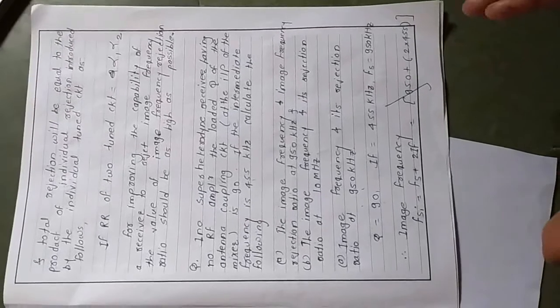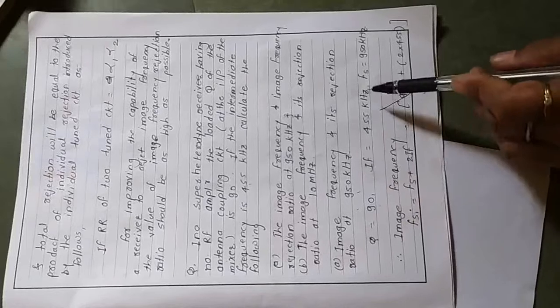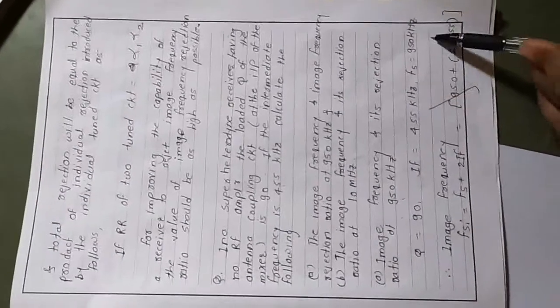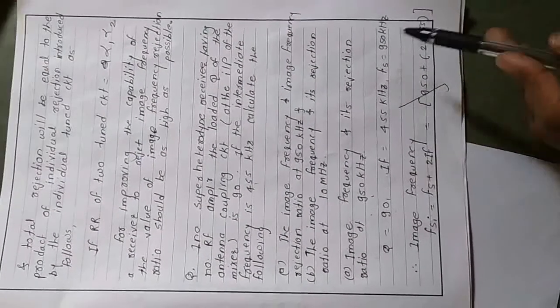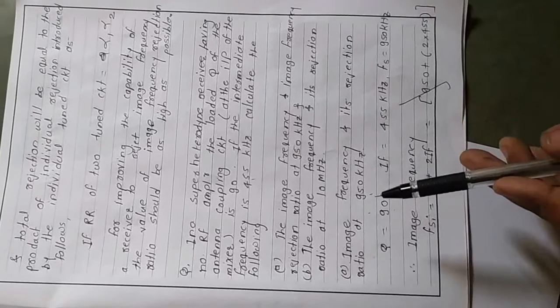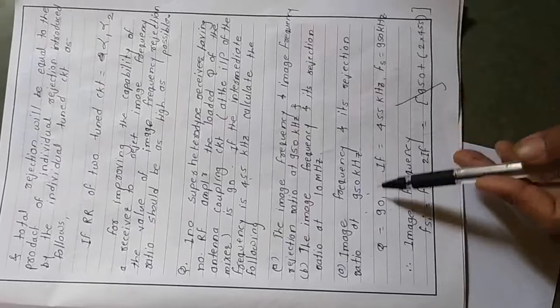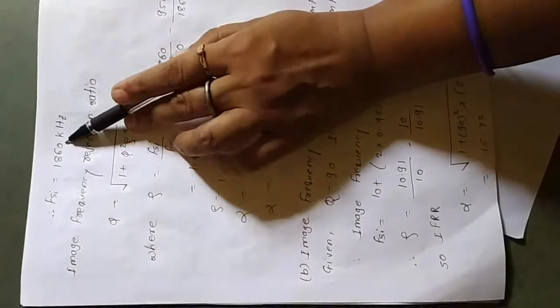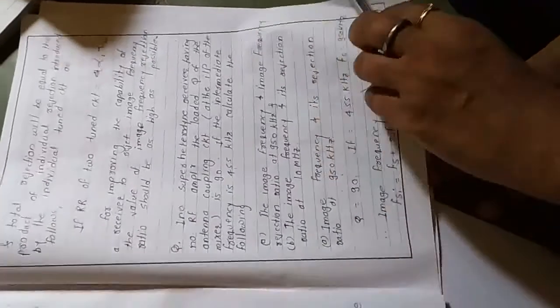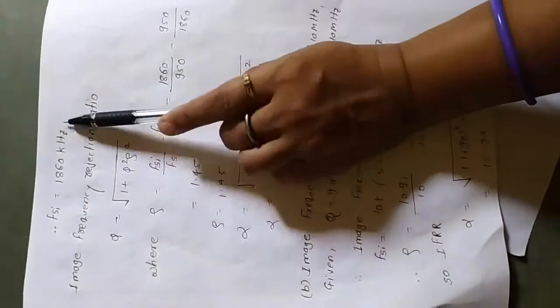If there is a mismatch in units — for example, if intermediate frequency is in hertz and signal frequency is in kilohertz — we need to equalize all units before calculation. Here, the image frequency FSI = 1860 kilohertz, since all frequencies used are in kilohertz.